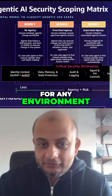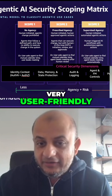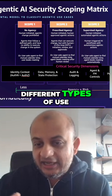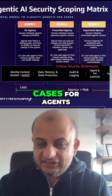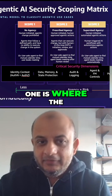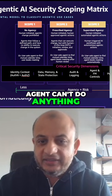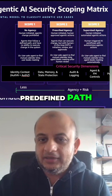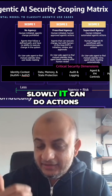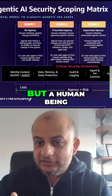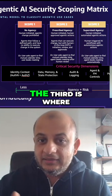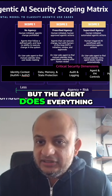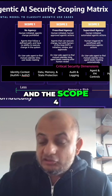It's very user-friendly. It tells you about the different types of use cases for agents. Scope one is where the agent can't do anything — the human has to do everything along a predefined path. Scope two is where it can slowly do actions but a human has to approve them. Scope three is where a human triggers it but the agent does everything.